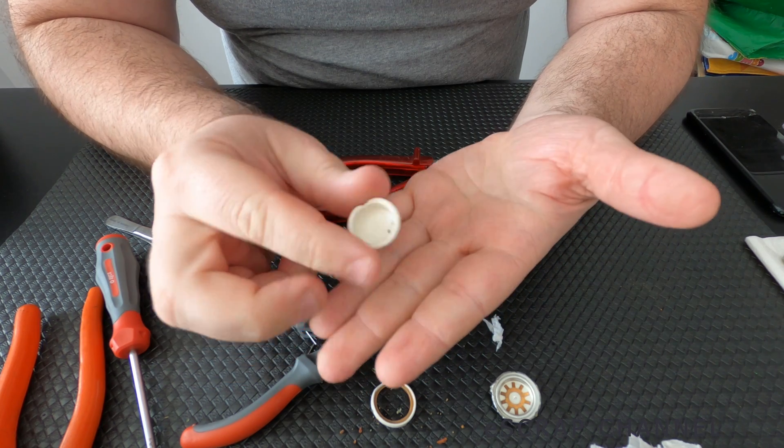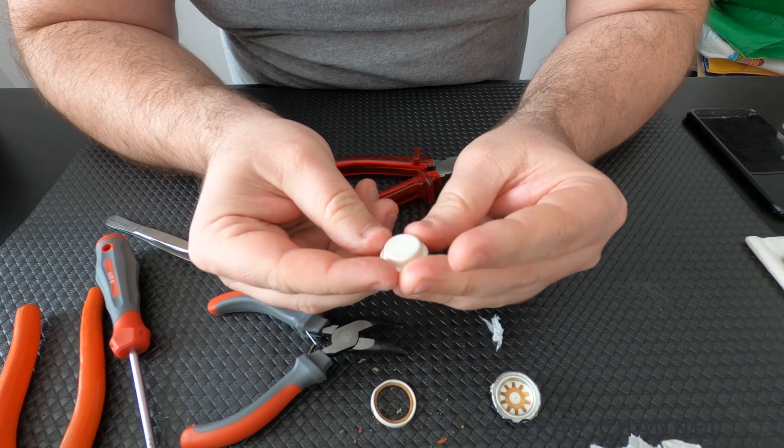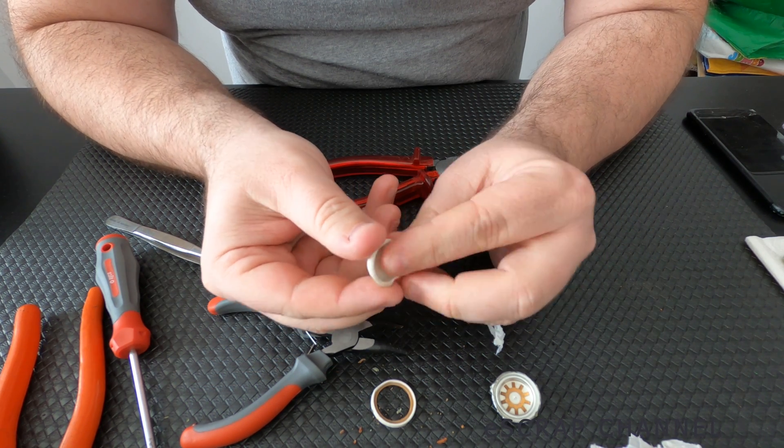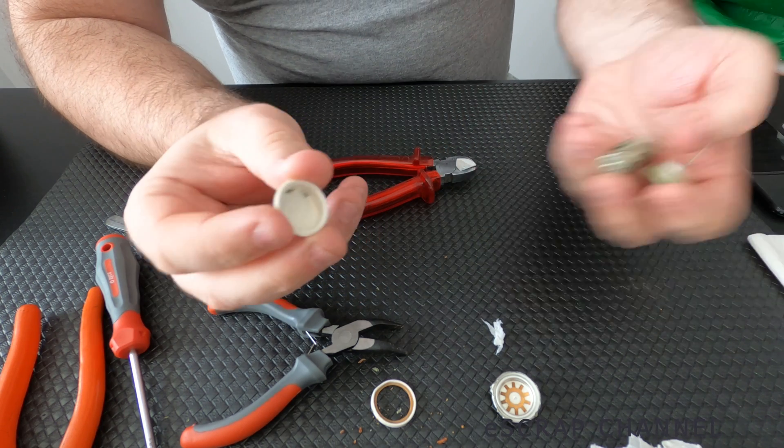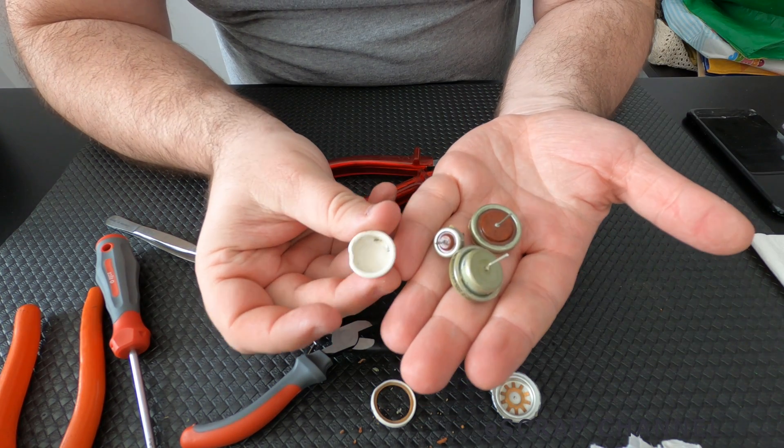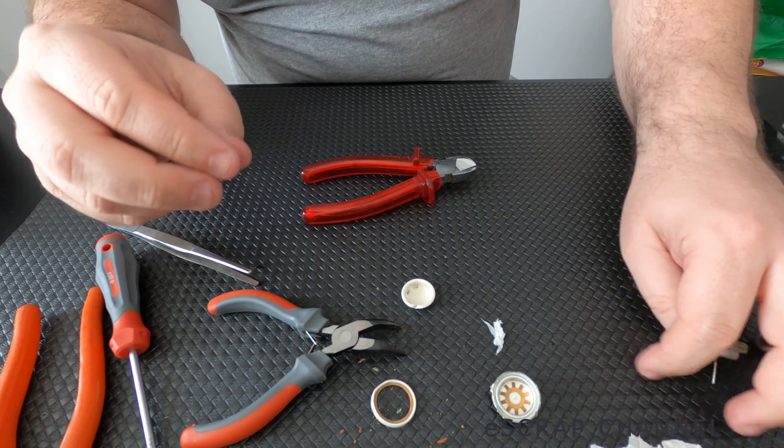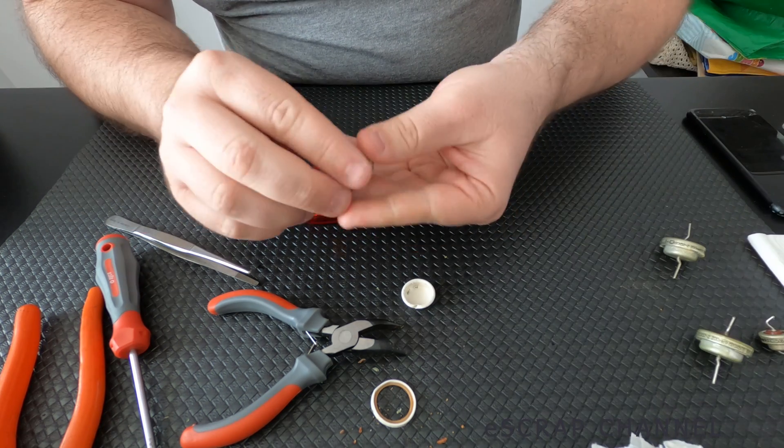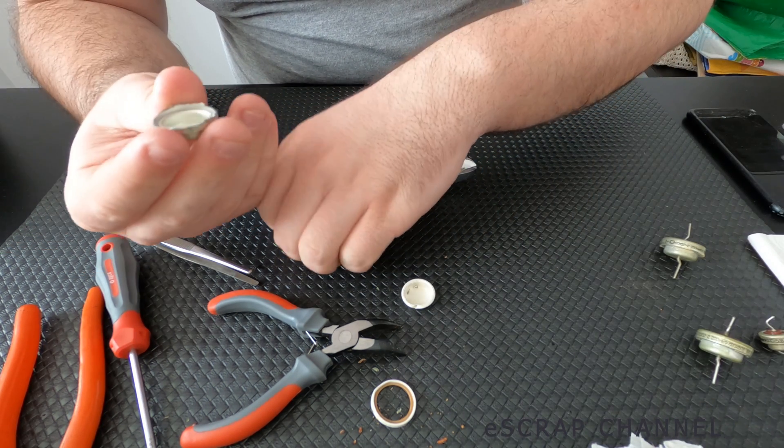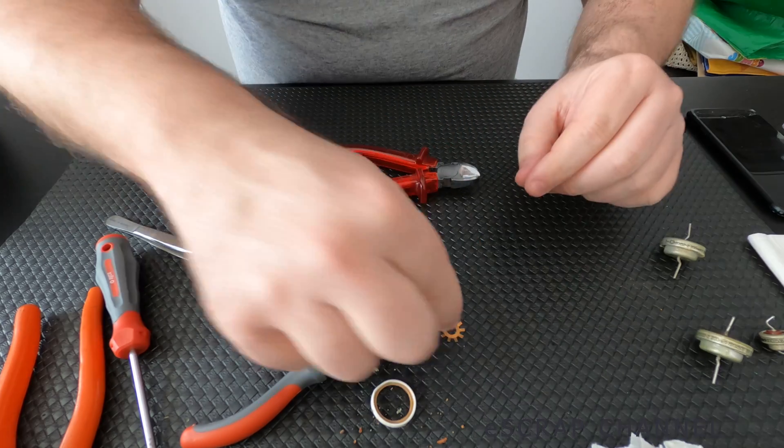So you see this white stuff? This is pure silver. And in every capacitor we have one of these. Let me show you the other three. They are still to be processed. But this is the first one. And this cup is made of pure silver. We have some small piece of copper also.